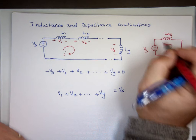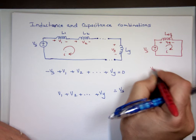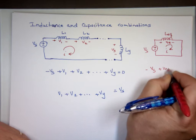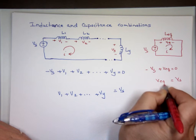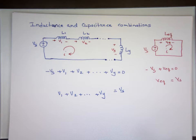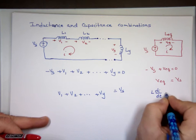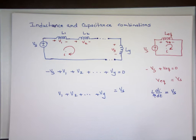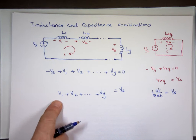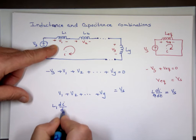Well, if we do this one, we'll call this V equivalent. If I do KVL in this one, that says negative VS plus V equivalent equals zero, or VS equals V equivalent. What's the voltage across an inductor? V equals L·di/dt. So V equivalent would be L_eq·di/dt. This one, V1, is going to be L1·di/dt. It's the same current going through all of them.